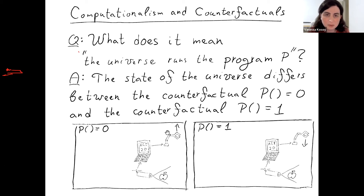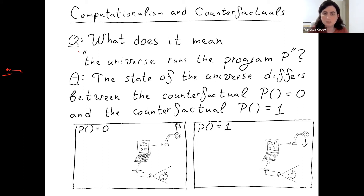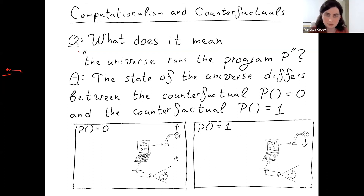Here's an example where an AI is controlling a robotic arm: the AI computes some program, and based on its output, decides whether to move the arm up or down. In the counterfactual where this program outputs 0, the arm moves up; where it outputs 1, the arm moves down. The physical state of the universe is distinct in those two logical counterfactuals — that's how we know, or that's the intuition behind the definition that says this program is actually running in such a universe.